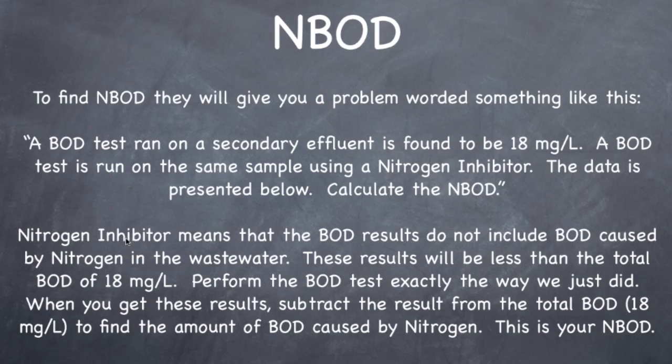When they say nitrogen inhibitor, it means that the BOD results do not include BOD caused by nitrogen. They're inhibiting, suppressing the nitrogen part of the BOD. So these results, since they're suppressed results, will be less than the total BOD of 18 milligrams per liter. So this is total. This is BOD of everything. Now, if you take that sample and you run nitrogen inhibitor, you're doing a BOD without nitrogen. So it's going to be less than the total BOD of 18.